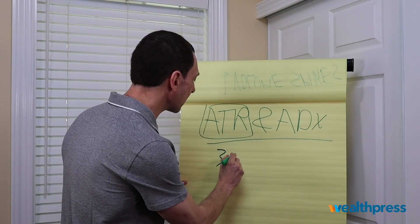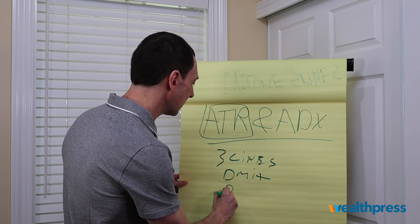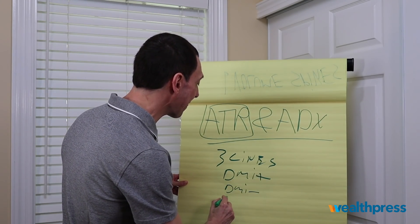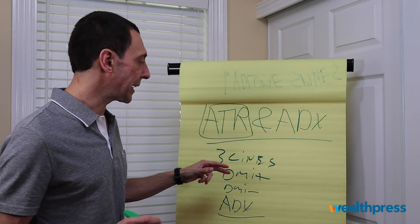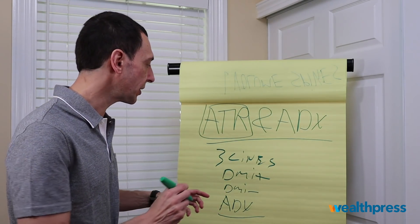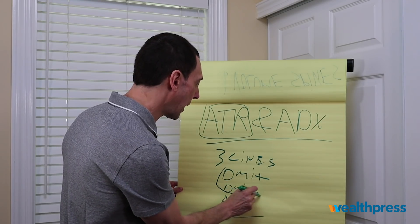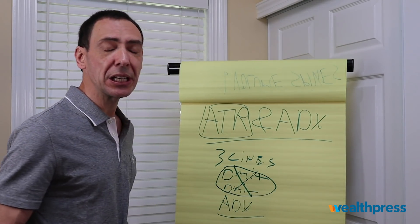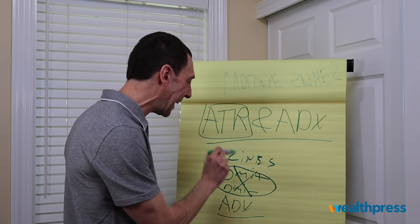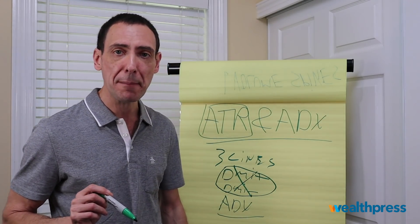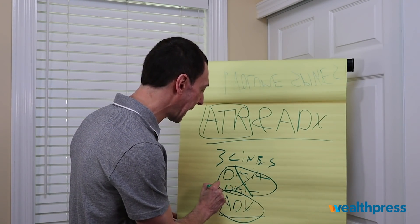The ADX has three lines: the DMI plus line, the DMI minus line, and the ADX line. Now, I know what you're thinking — Roger's going to get all technical and mathematical and start explaining all three lines. But I'm not going to do that. You're going to completely avoid the DMI plus and minus lines. They are completely useless. No backtest I've ever done has shown any benefit from using the DMI plus or DMI minus line. The only line you want to focus on when you put up the ADX indicator is the ADX line.